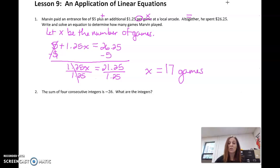Now, as you're going to see in your homework, these directions right here say write an equation and solve the equation. We need both. So we need our equation written and then it's solved. So 17 games Marvin played. Let's look at another example.